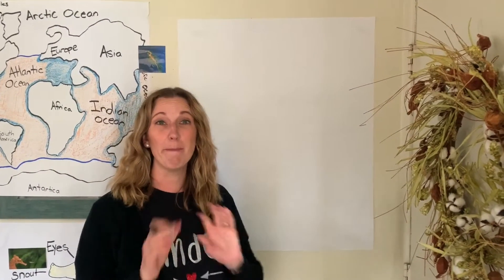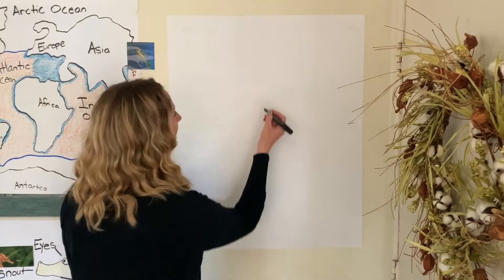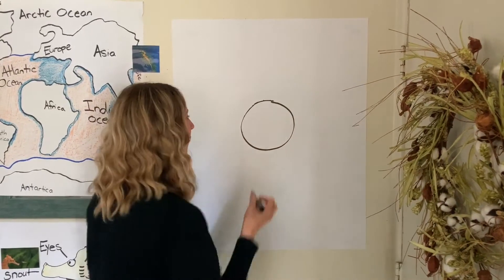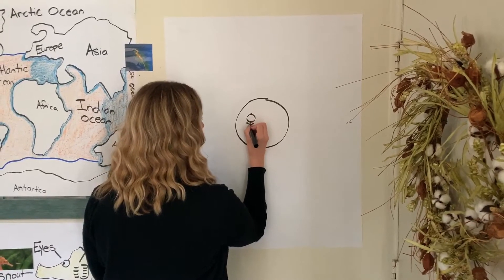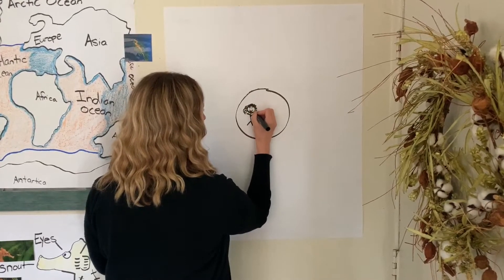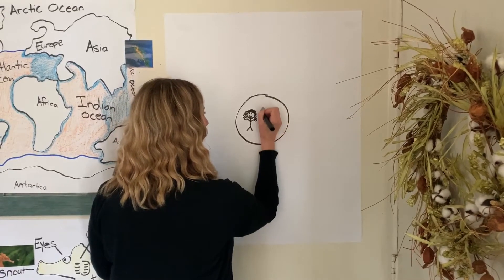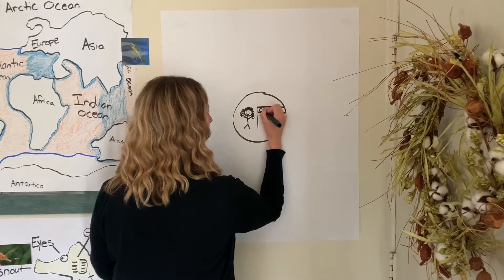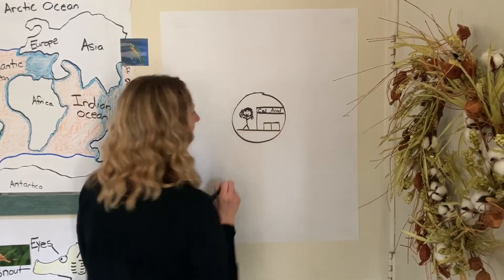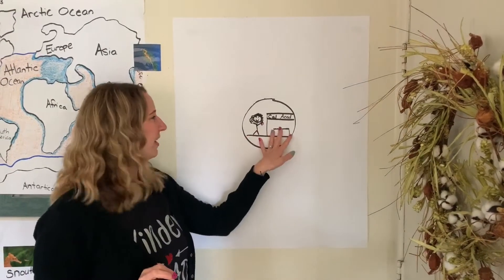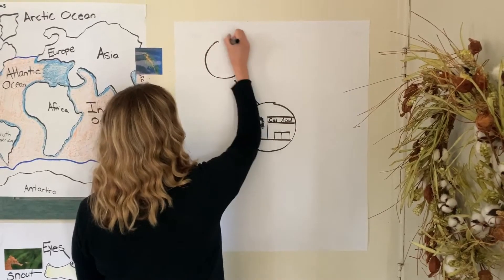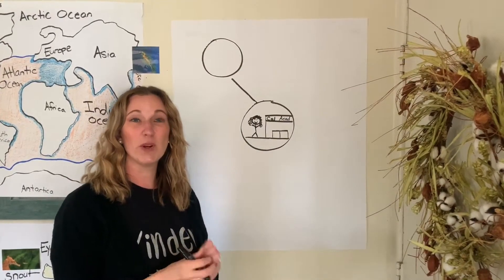Okay, so now it's time to map out our thoughts and our events. In the middle of my paper, I'm going to draw a circle, and inside I'm going to draw myself at the Academy of Sciences, because I know that's where I want my story to take place and I'm the character. I'm going to draw me going into the Academy of Sciences and write 'Cal Academy.' Here are the doors and the sidewalk. The first thing I did when I went to the Academy of Sciences was go into the indoor rainforest and saw butterflies.